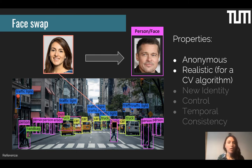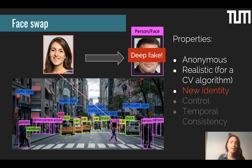Let's look at different ways of exchanging faces or bodies in the literature. Face swapping is quite a common methodology — for example, I can swap my face for Brad Pitt's. I will remain anonymous and it looks realistic because a face detection algorithm will detect it as a face. But I have not generated a new identity — I've created a deep fake. The computer vision algorithm will detect that Brad Pitt was in that scene at that time, which is not true. This is why we cannot use face swapping for video anonymization.